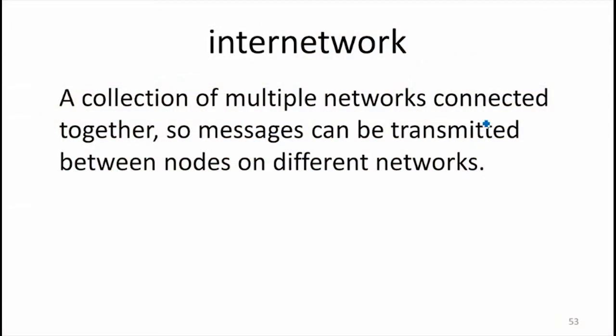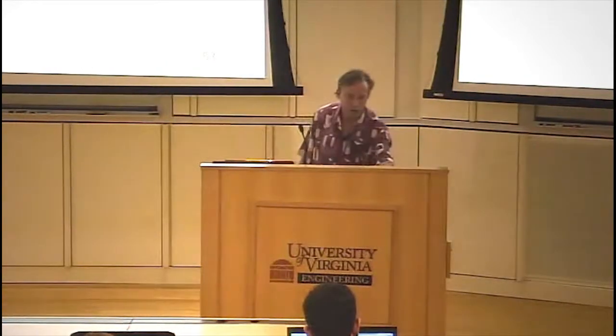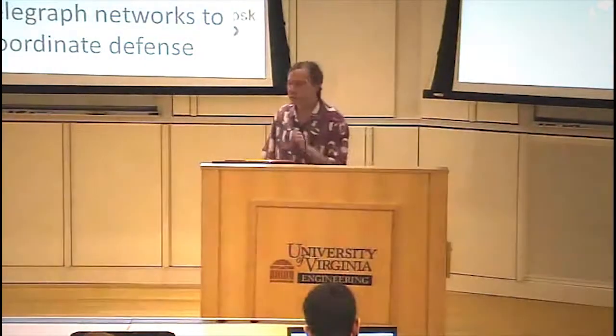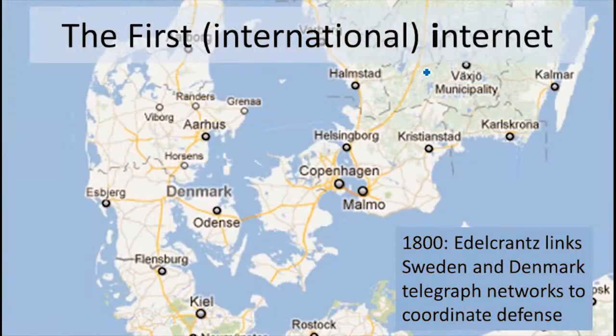An internet network is a connection of multiple networks that are connected together — this is internet with a lowercase i. Anytime we're connecting networks where different networks have different protocols, different routing systems, once we connect them, we have an internet network.